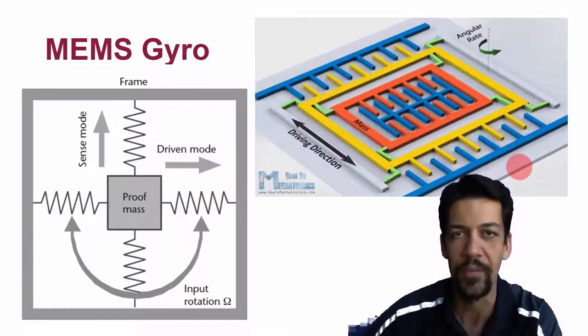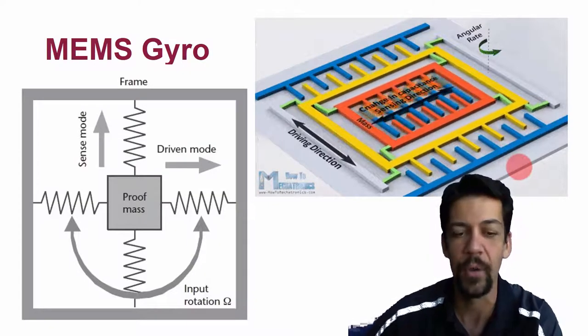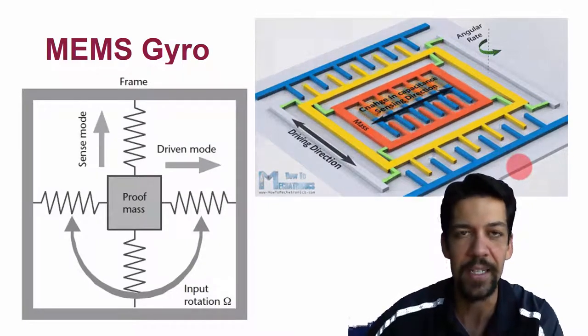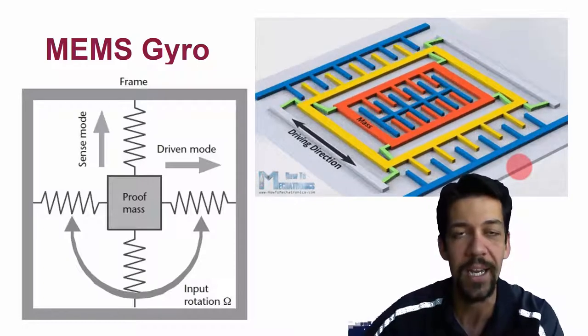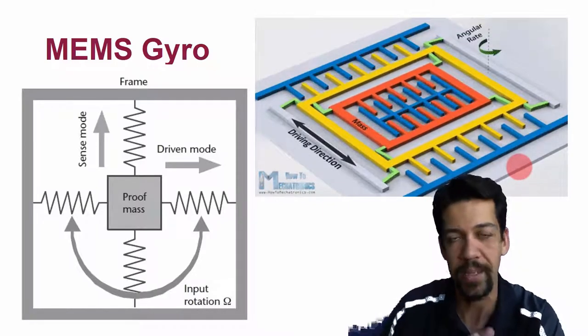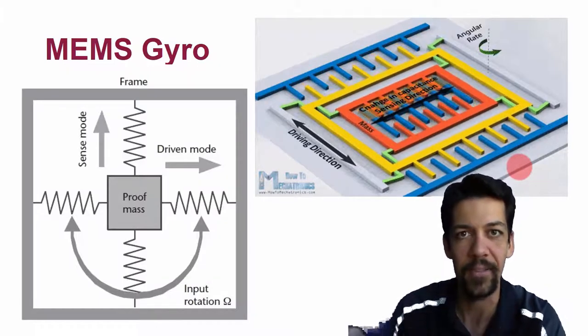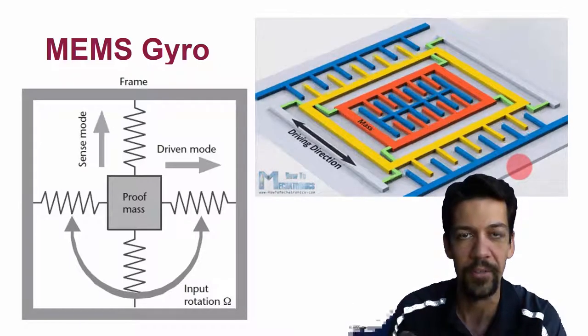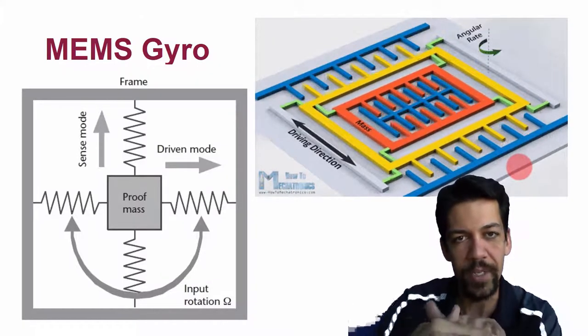MEMS gyros work very similarly to this. We can etch these things onto the chip. Instead of a spinning mass, we have a vibrating mass that wiggles back and forth and that still has angular momentum conservation.